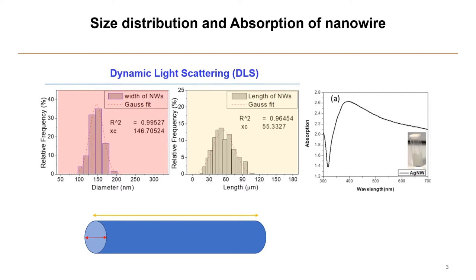At first, we synthesize silver nanowires by a wet chemical approach. Dynamic light scattering analysis shows the average diameter of nanowires to be about 150 nanometers and length to be 50 micrometers. Our synthesized nanowires show a broad absorption spectrum spanning over the entire visible region, making them suitable for plasmon-enhanced fluorescence (PEF) application.